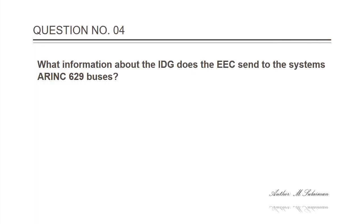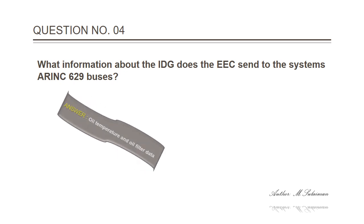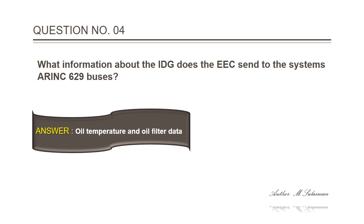Question 4: What information about the IDG does the EEC send to the systems ARINC 629 buses? Answer: Oil temperature and oil filter data.